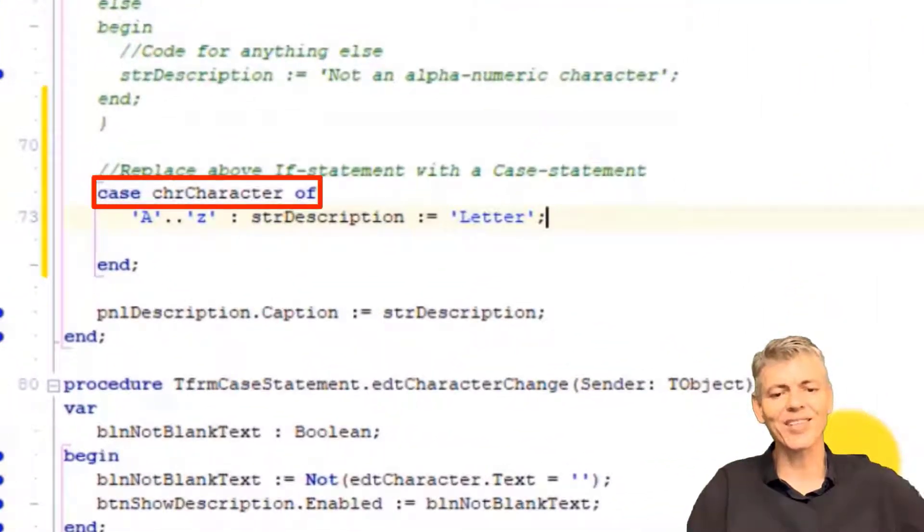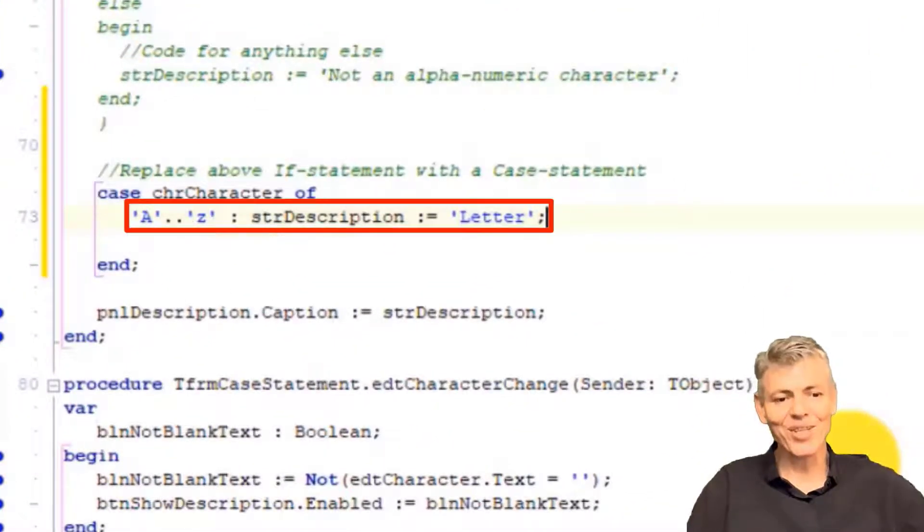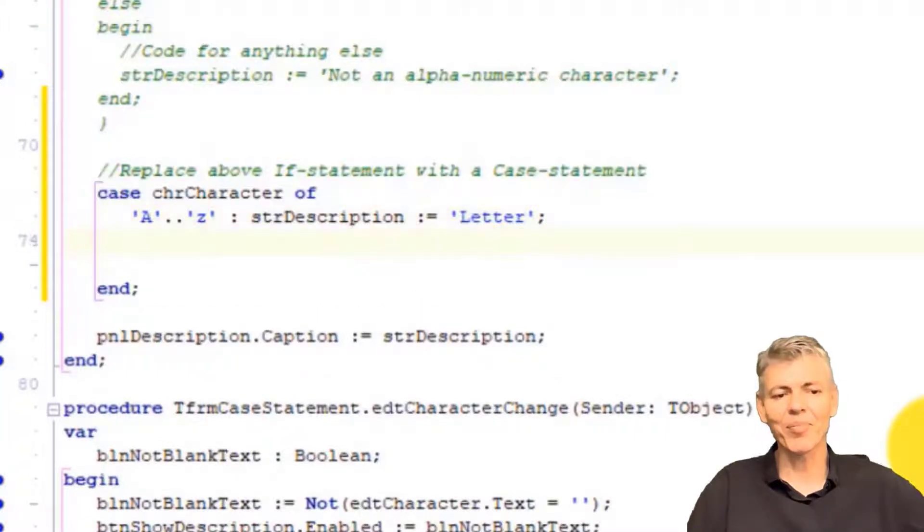Here we use chrCharacter as the selector. Our first option in the case list is to check if the character is in the alphabetical range of uppercase A to lowercase Z. So that includes all the alphabetical characters. So this is like saying, if this condition is true, then assign the word letter to the string variable named strDescription. That will then be displayed in the panel by this statement. Go to the next line and type this.